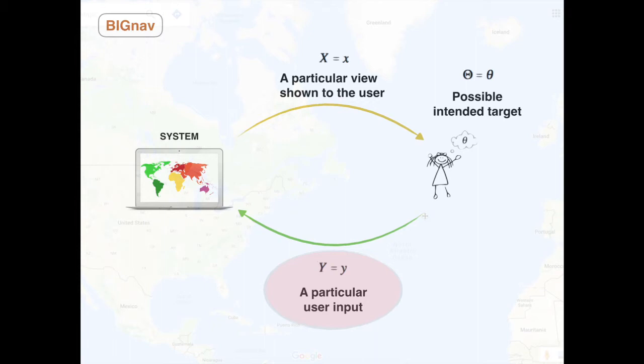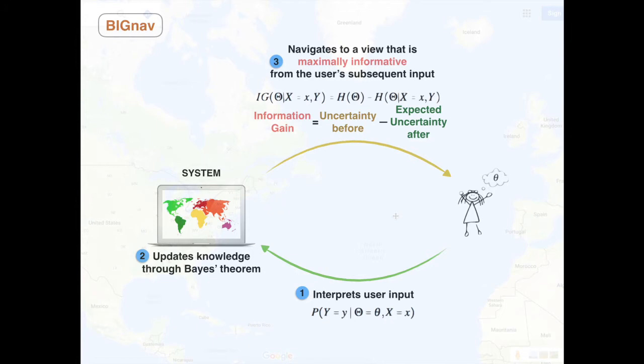Big Nav guides navigation through a three-step process. First, the system interprets user input as an intention that reveals what the user is and is not interested in. Next, the system updates a probabilistic model of the information space, taking the user's intention into account. Finally, the system navigates to a new view such that the next user input maximizes the expected information gained by the system.